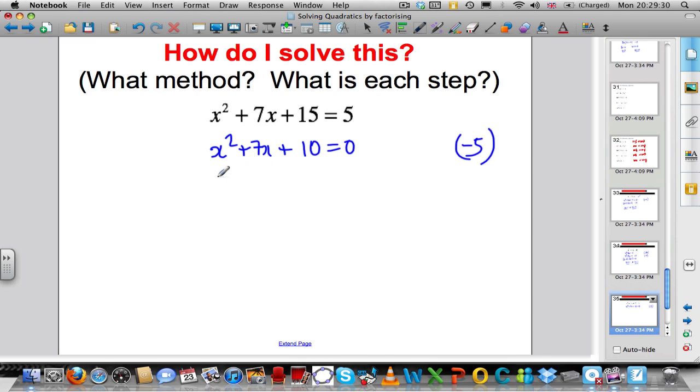Factorise now. x plus 2, x plus 5 equals 0. So, x is minus 2 or x is minus 5. Again, check those answers work in the top.